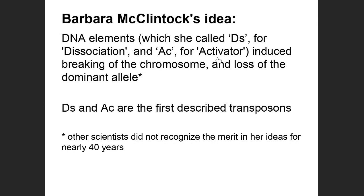But she called these the DS for dissociation and AC for activation. So she didn't just think there is one thing that jumps around — it's even more complex than that, and it will take a few slides for me to walk you through her idea. These things jump around and break the gene, and when the dominant allele gets broken it's no longer expressed, and then you get the expression of the recessive allele show up. The DS and AC were the first described transposons, and it took 40 years for people to see that her idea had its merits. She actually got the Nobel Prize for medicine and physiology working with corn — it's pretty amazing.